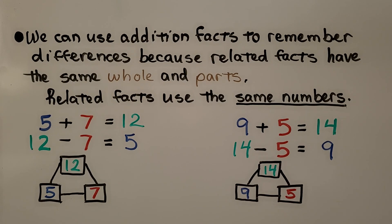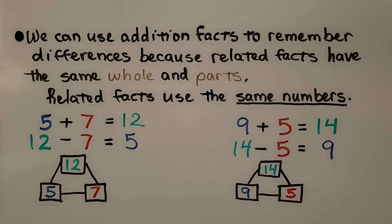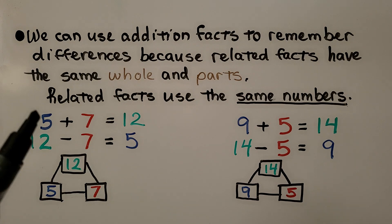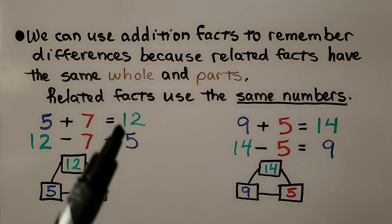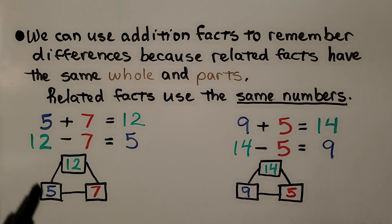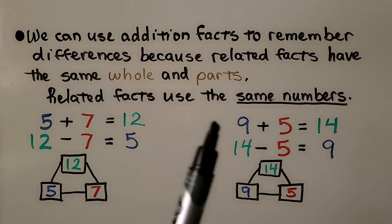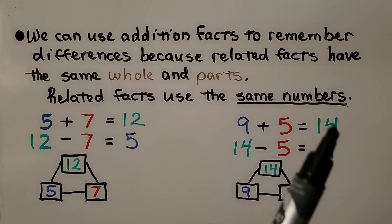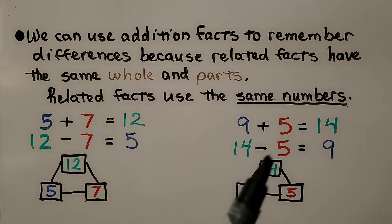We can use addition facts to remember differences because related facts have the same whole and parts. Related facts use the same numbers. Here we have a related addition and subtraction fact using 9, 5, and 14. We have a 9, a 5, and a 14 — it's the same numbers.